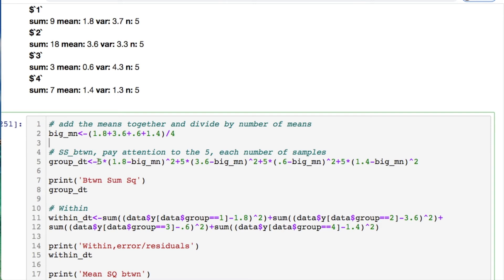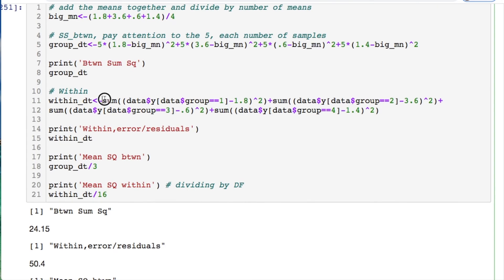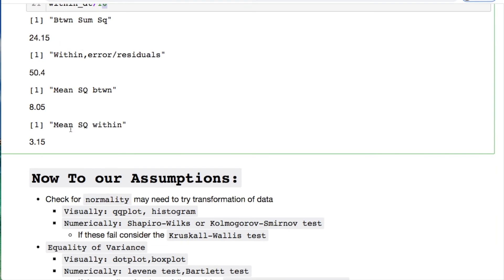Then to get the sum of squares between, remember that we had to do that multiplication by n. So I have five instances of each sample or each group. And then I'm taking the individual mean for that column as well as the sum of those means divided by four. And I'm running that through each one of those columns. Then I'm printing that out. From there we're taking the sum of the y with respect to each group, subtracting the individual column mean and then summing it together. And doing that for each one of the four different groups. Then to get the mean squared error, divide it by the degrees of freedom for within and between. And that's how we get our answers right here. I know that's kind of fast. And that's how we worked backwards to get our answers.